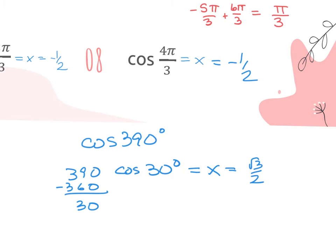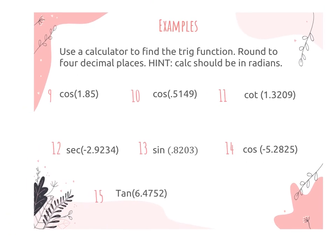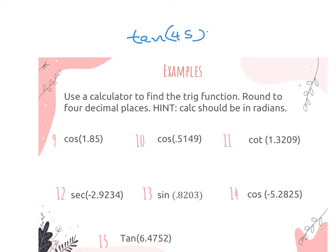Now we're going to do calculator — values not on the unit circle. Make sure your calculator is in radians. On the graphing calculator, hit the mode button, go to the line with degrees and radians, highlight 'radian,' hit enter, then hit the blue button and quit. On a scientific calculator, look for a button that says DRG, or sometimes Setup or Menus. You can check by doing tangent of 45 — if you're in radians, you'll get approximately 1.6198 instead of 1.